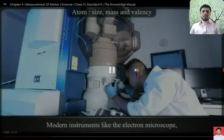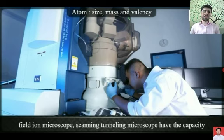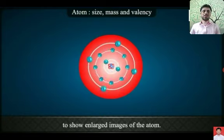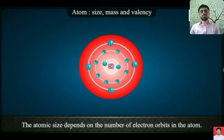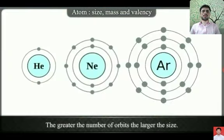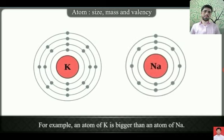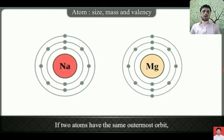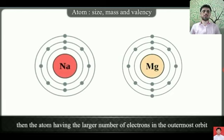Atoms are very small particles and modern instruments like the field ion microscope and scanning tunneling microscope can show enlarged images of an atom. The atomic size depends on the number of electrons present in the orbits — the greater the number of orbits, the larger the size. For example, the atom of potassium is bigger than the atom of sodium. If two atoms have the same outermost orbit, then the atom having the larger number of electrons in the outermost orbit will be smaller.